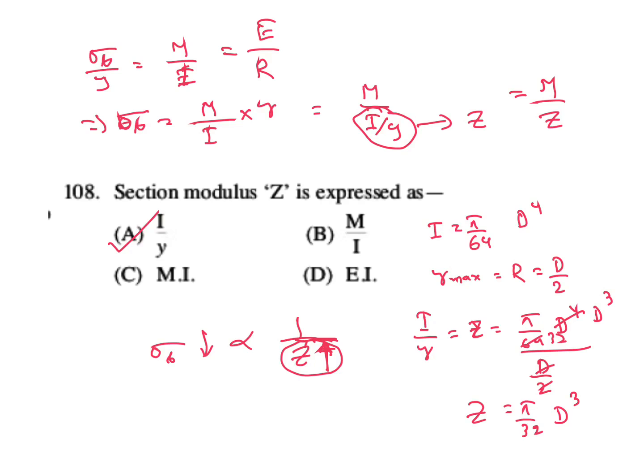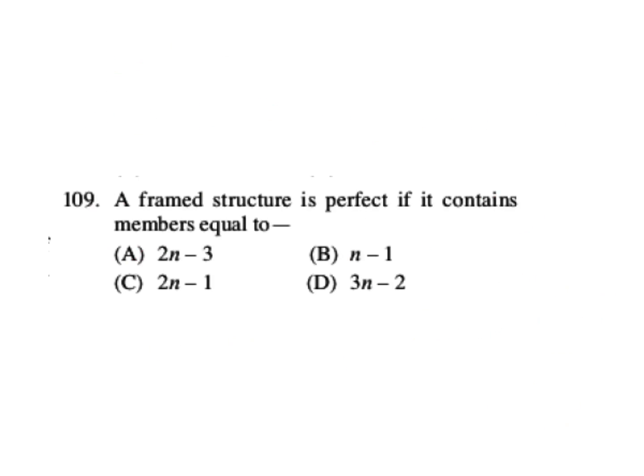Question is: a framed structure is perfect if it contains number equal to - this one they asked in GATE also. m equal to 2j minus 3. Here j replace with n: 2n minus 3. A is your correct answer. Your m is your number of links and n is your number of joints.